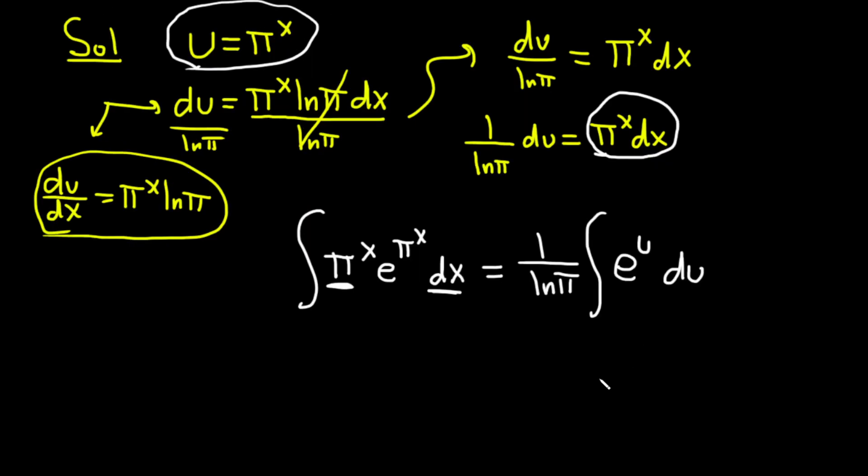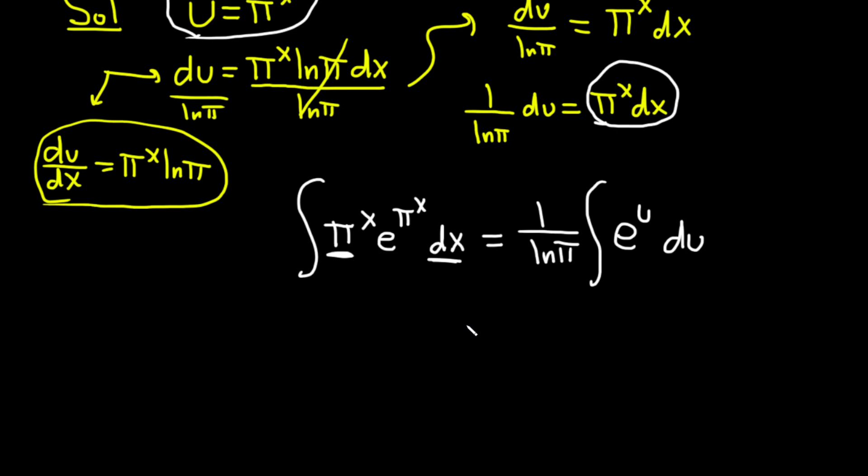And this becomes the easiest integral in the world because the integral of e to the u is e to the u. We have 1 over the ln π times, and then e to the u, but u is π to the x. Plus our constant of integration, capital C. So I skipped a step. It's e to the u. And then you replace u with π to the x. But that would be the final answer.